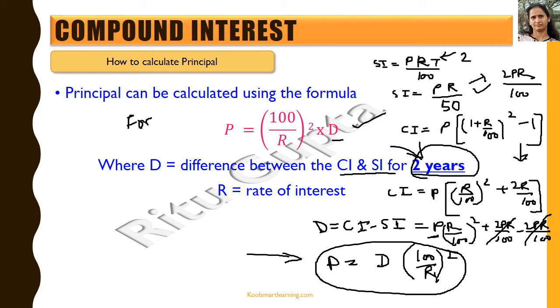This formula is only to be used for 2 years. That is why you can see that in the formula the time period t is not appearing, because we have already replaced it with 2.